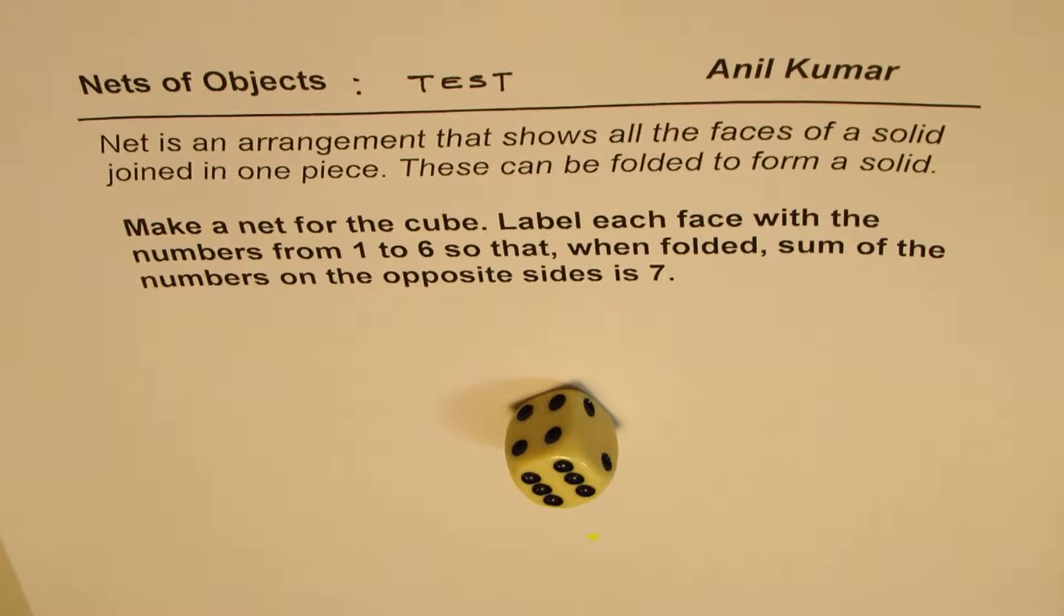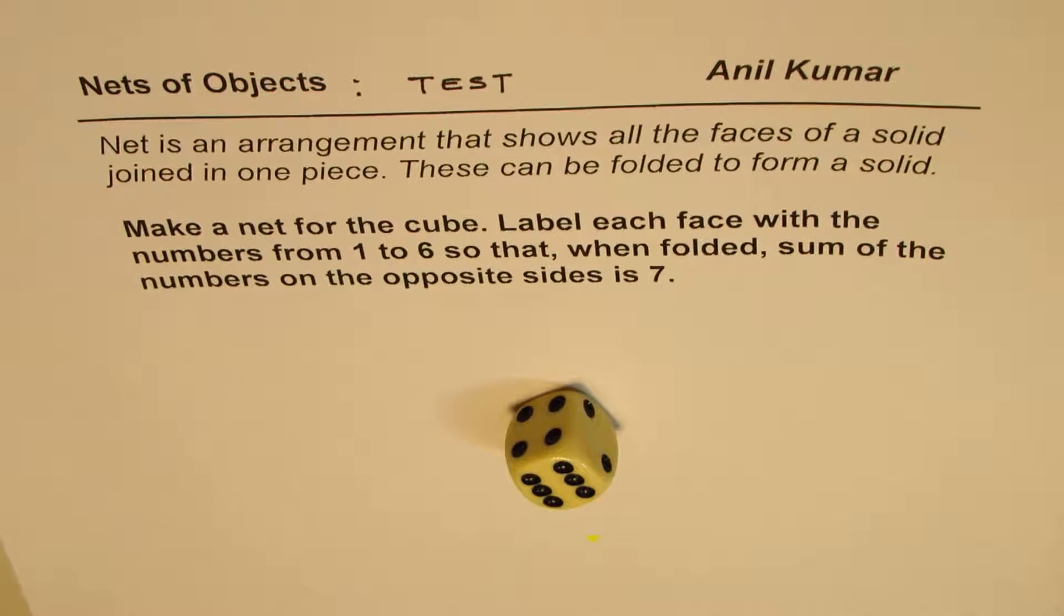I'm Anil Kumar sharing with you a test question on nets of objects. As you know, a net is an arrangement that shows all the faces of a solid joined in one piece. These can be folded to form a solid.